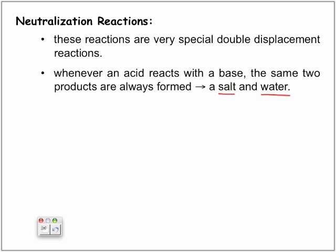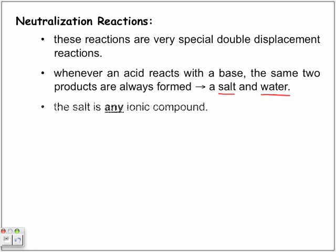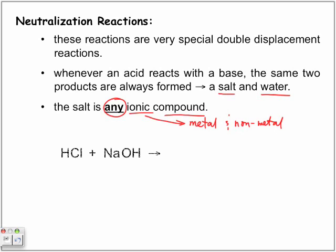Now, let's look at the term 'salt.' What is a salt? A salt is any ionic compound, and an ionic compound is a compound that is formed when you have a metal combining with a non-metal.